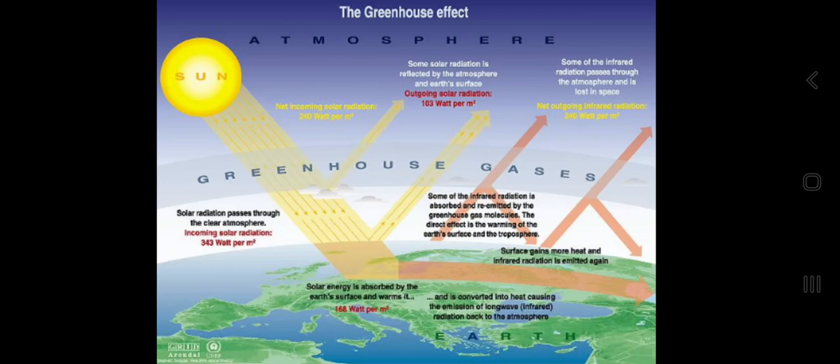This diagram shows the greenhouse effect. Greenhouse gases are present in the atmosphere as a thick layer. Short wavelength sunlight falls on the earth's surface and converts to long wave radiations which will not be allowed by greenhouse gases to escape from the earth's surface. That's why CO2 concentration in the atmosphere is rising. Solar radiation forces through the clear atmosphere - incoming solar radiation is 343 watts per meter square, outgoing solar radiation is only 103 watts per meter square. The net incoming solar radiation is 240 watts per meter square.